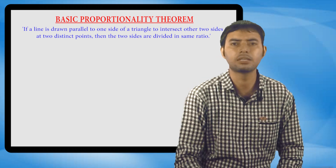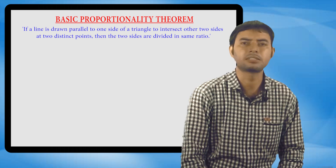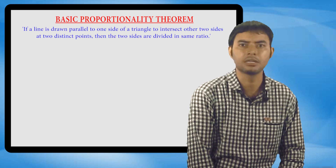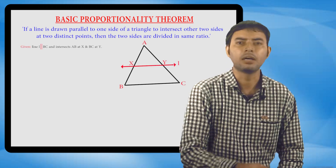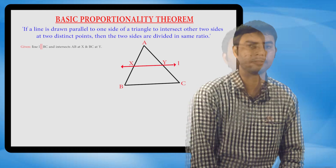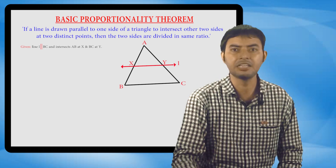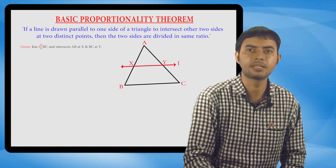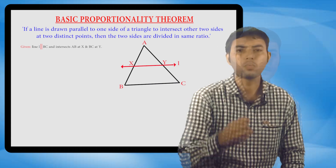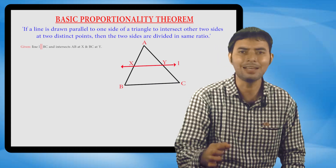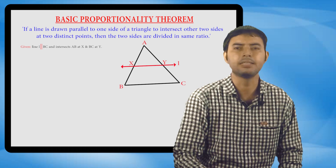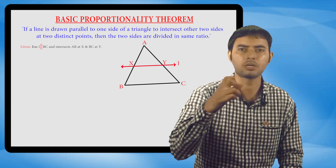What is the given data in this statement? The given data is that line L is parallel to side BC and it intersects AB at X and AC at Y. So what we have to prove? This line L divides AB and AC in equal ratio.